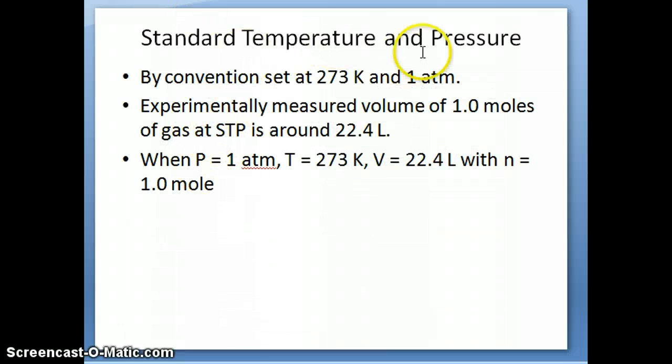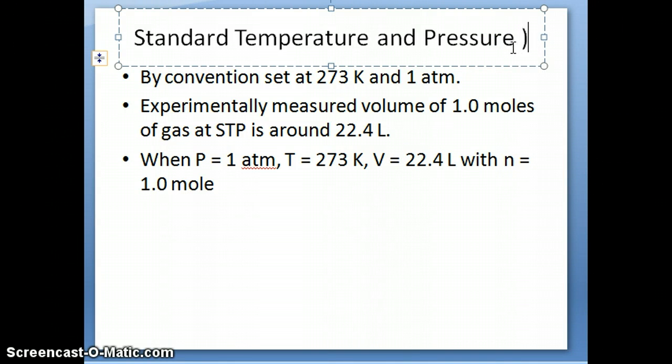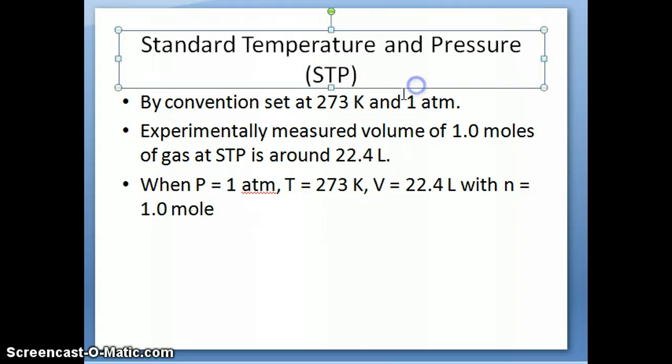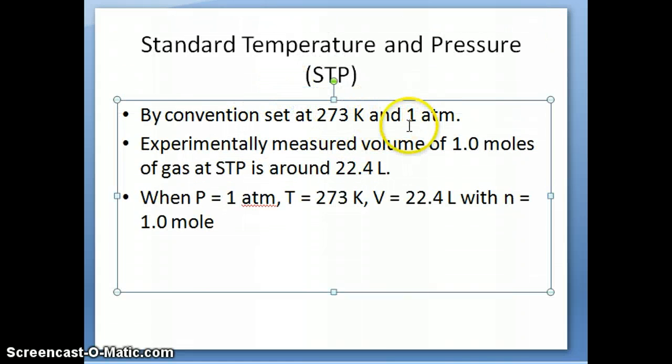Now, there's a special set of conditions where people determine the volume of a mole of a gas, and this is called standard temperature and pressure condition, often shortened as STP. And this condition is, by convention, set to be 273 Kelvin and one atmosphere. If you were to measure the volume of one mole of a gas at 273 K and one atmosphere, you'll find that that number always hovers around 22.4 liters, usually 22.41 liters, depending on how many sig figs you actually have. But 22.4 liters is usually the one that we use. So when P is equal to one atmosphere, T is equal to 273, volume is 22.4 as long as you have one mole of a gas.